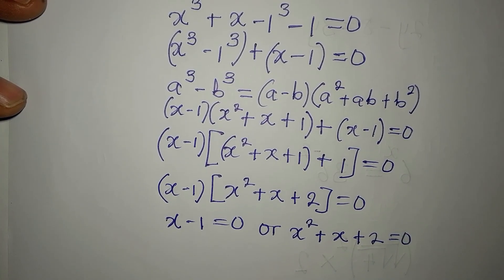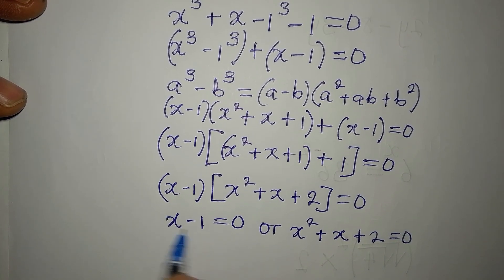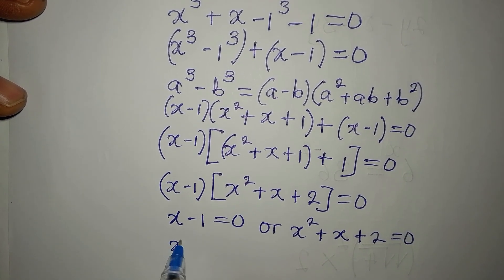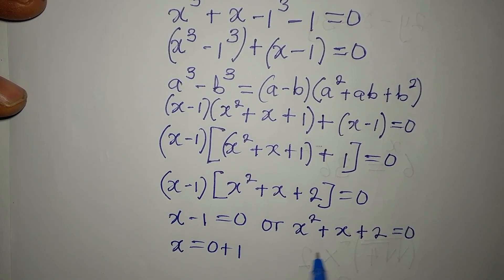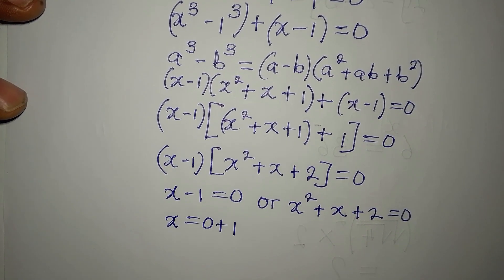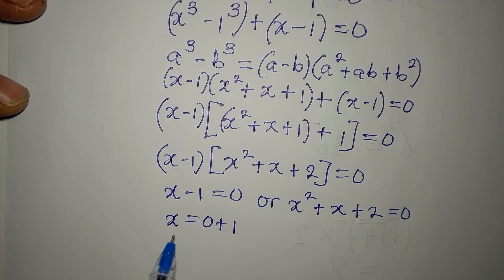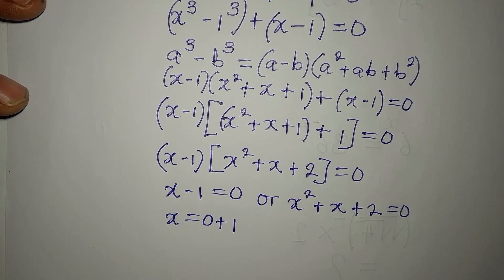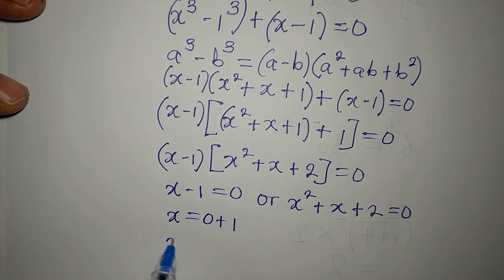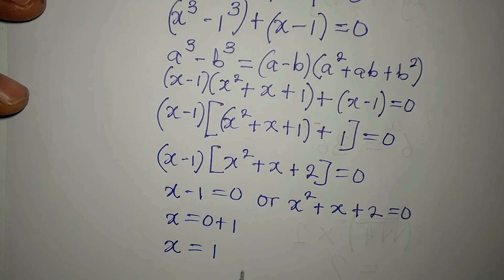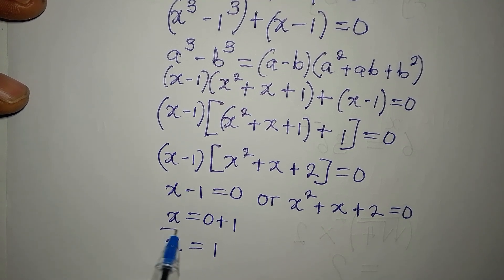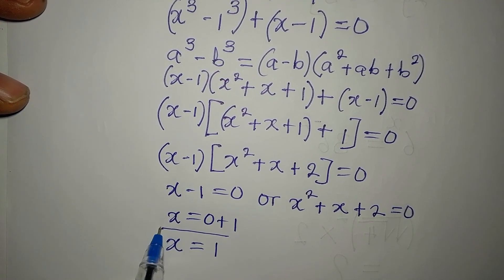From x − 1 = 0, we get x = 1 as one of the solutions. We will then solve the quadratic x² + x + 2 = 0 separately.